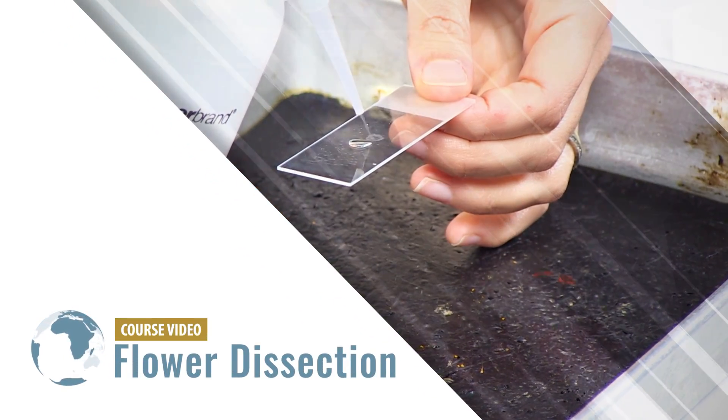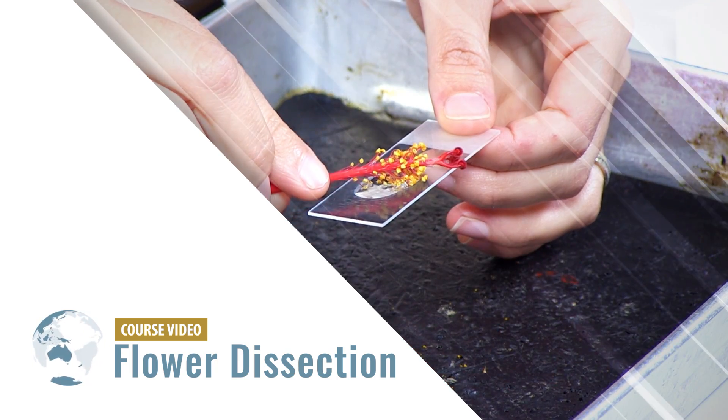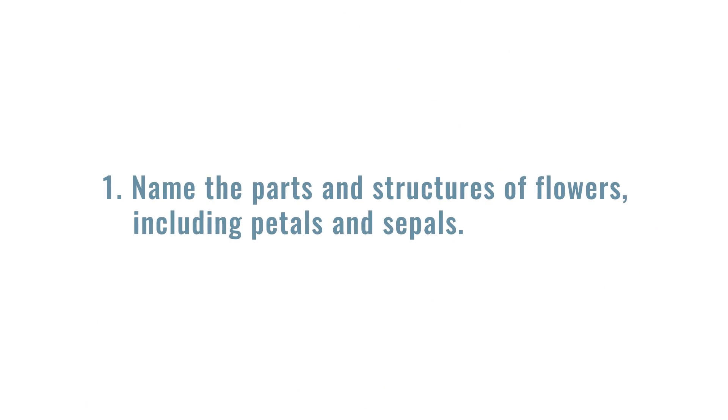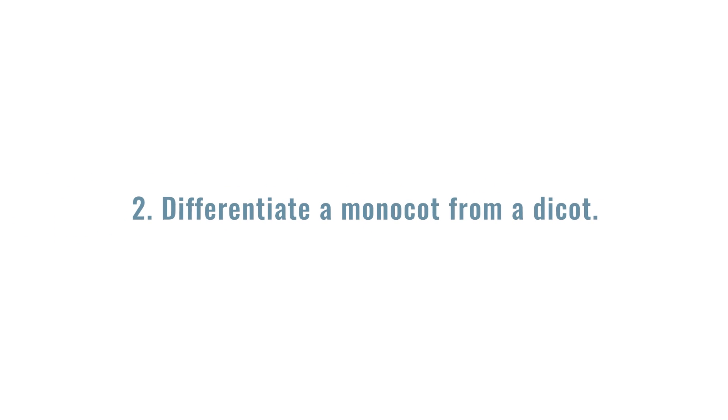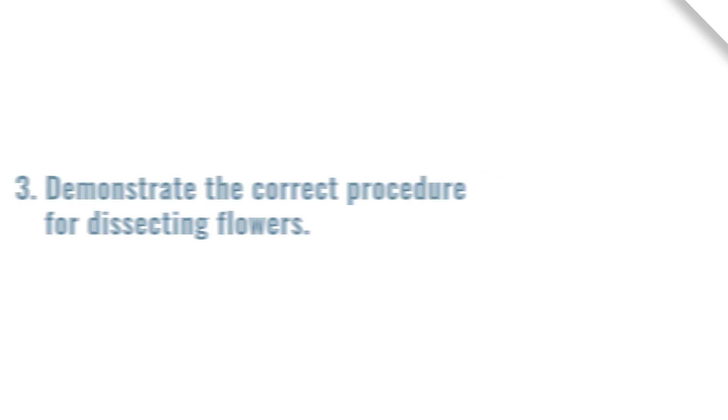Flower dissection. After completing this video you should be able to: one, name the parts and structures of flowers including petals and sepals; two, differentiate a monocot from a dicot; and three, demonstrate the correct procedure for dissecting flowers.